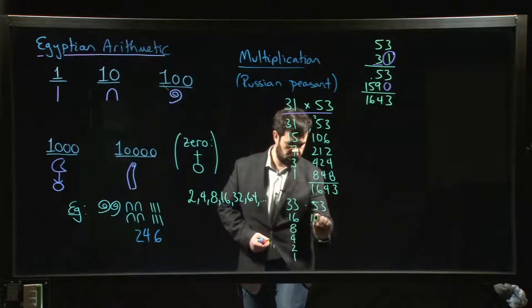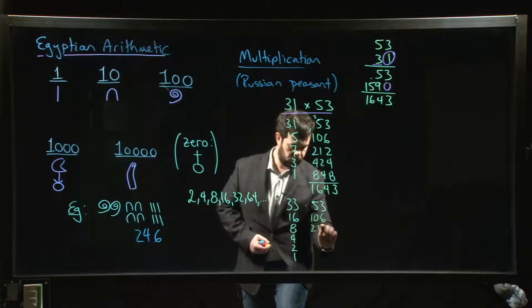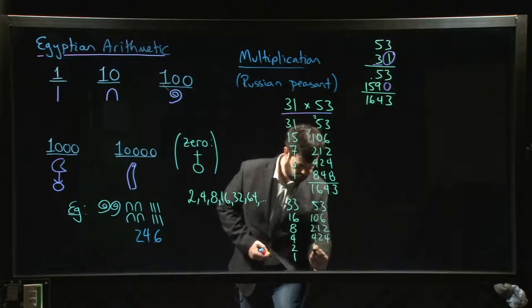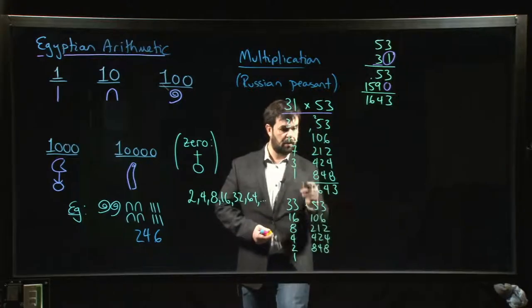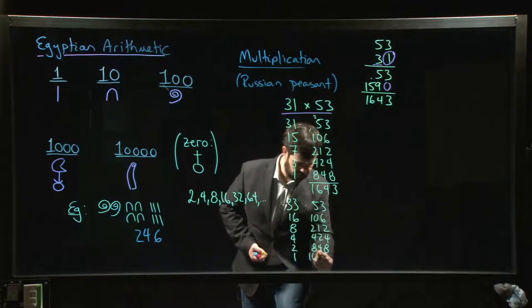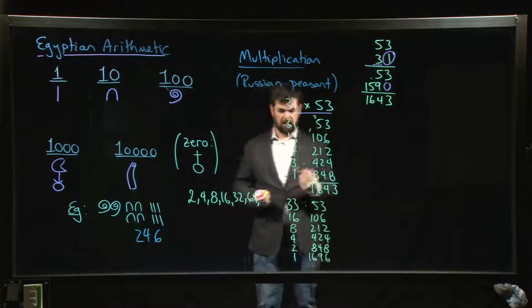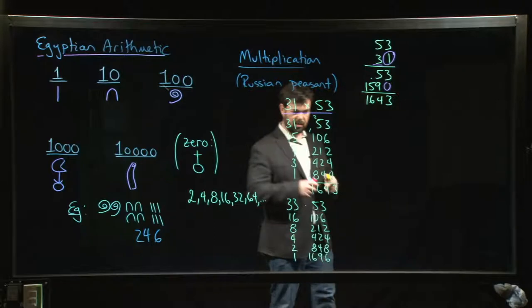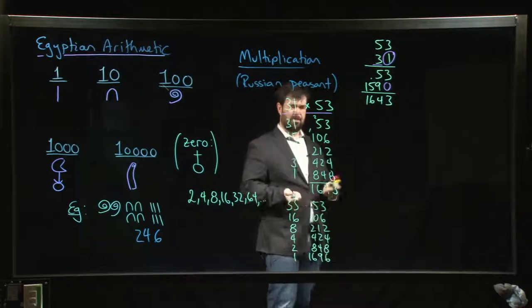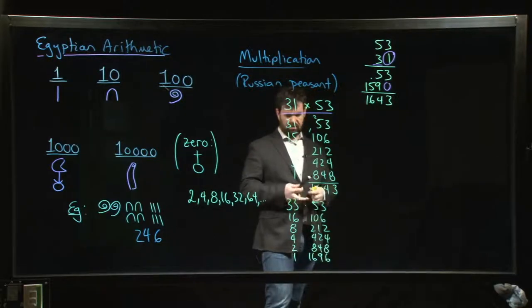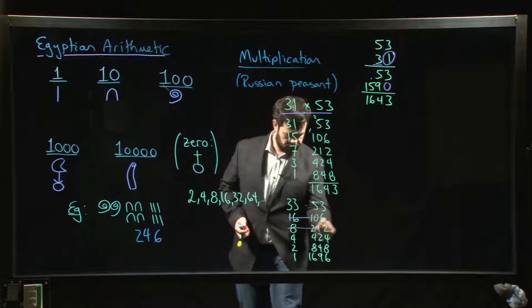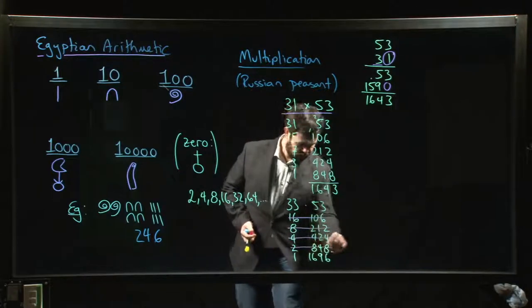On the other side I do the same doubling. We have 106, 212, 424, 848. I need to double one more time, so if I double 848 I get 1696. These are fairly extreme examples. Usually when you do this you land somewhere in between. Some of these numbers are going to be even, some of them are going to be odd.